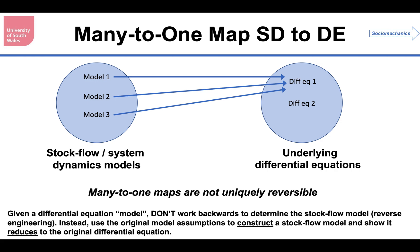So on the left, we've got our stock flow models, our system dynamics models. By the way, I'm calling them stock flow models because the word system dynamics means different things to different mathematicians. But if you're a system dynamicist, you'll know the two are equivalent. On the right hand side, I've got differential equations, and I can see I've got three models there. Model one, model two, model three, all map to the same differential equation. And many to one maps are not uniquely reversible.